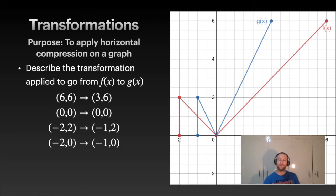You'll notice with this, the y value stays the same, but the x value gets cut in half. So, if the x value is cut in half, we've got a horizontal compression. It's compressed by a factor of 2. Therefore, our function looks like this: g of x equals f of 2x. So, that's our compression.